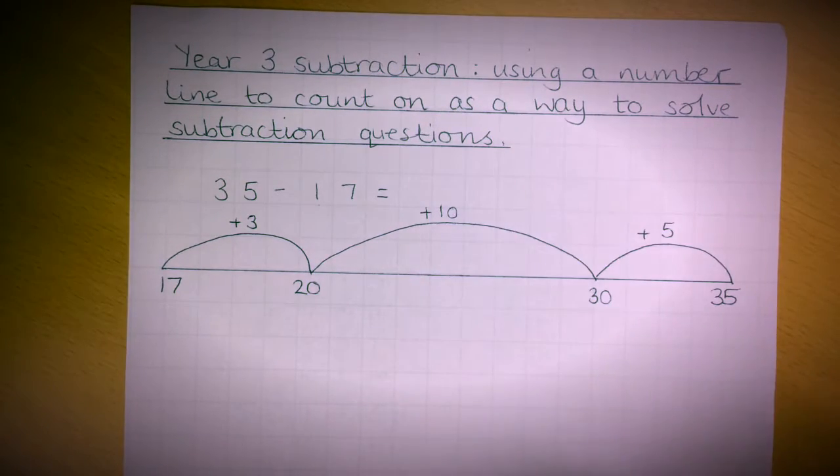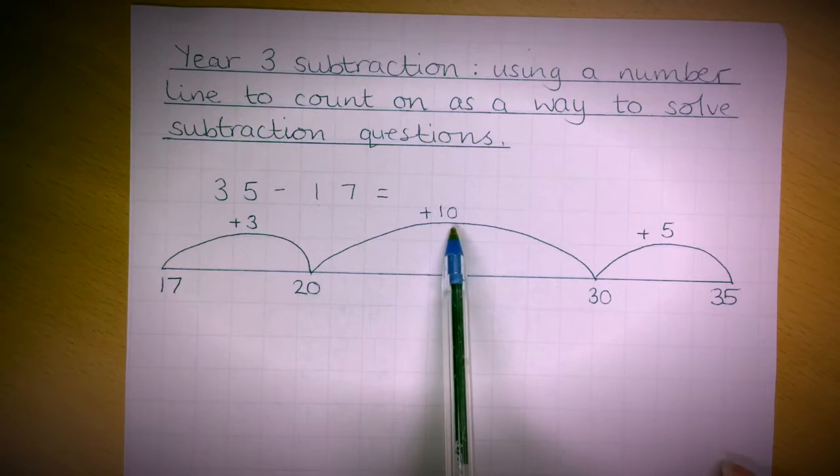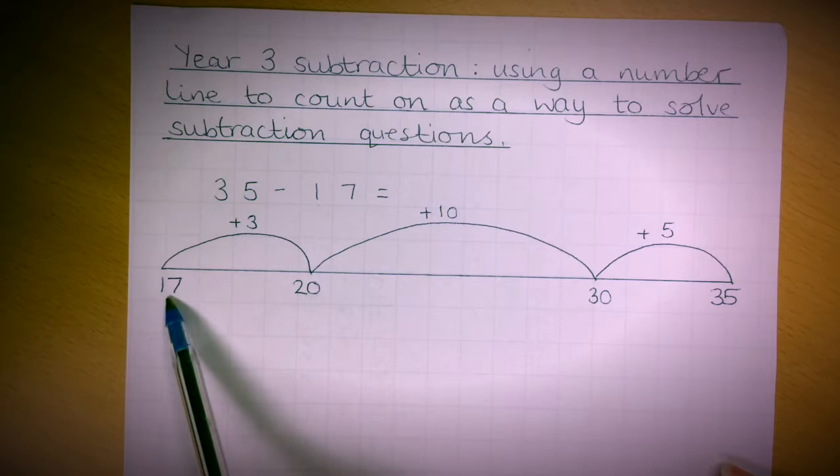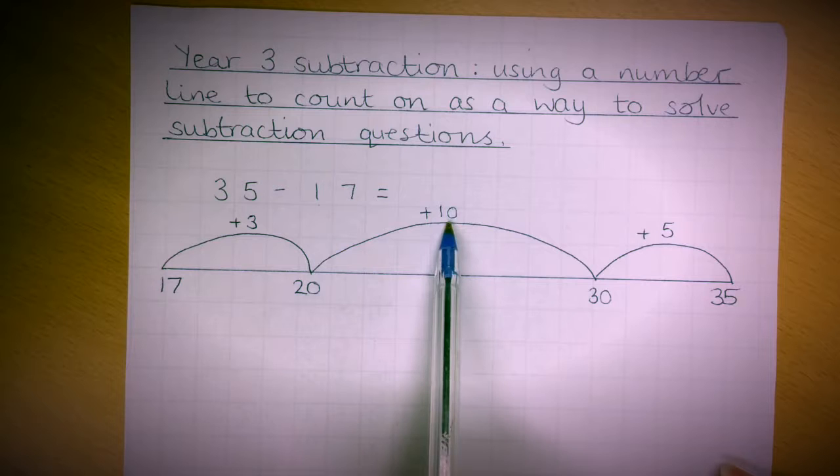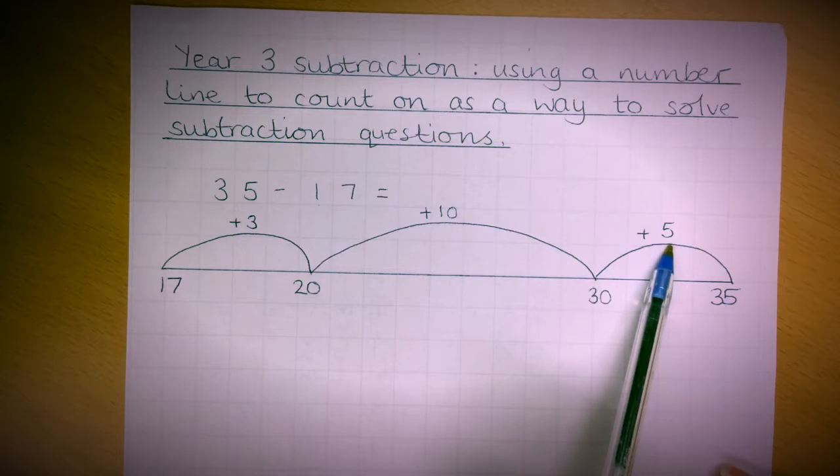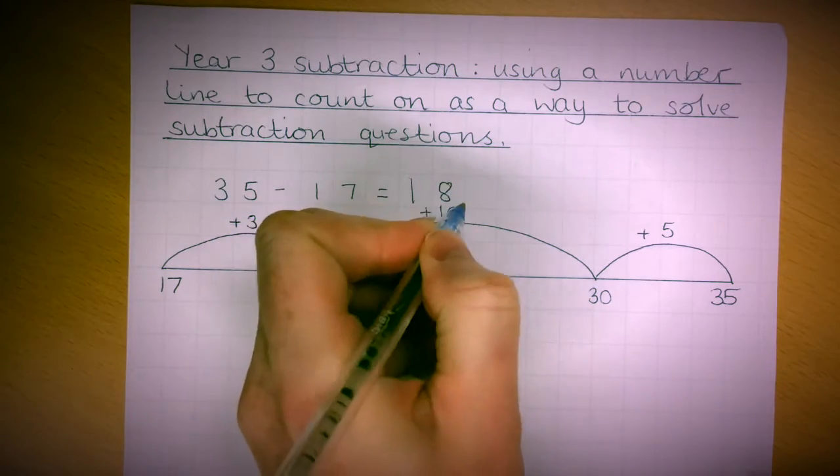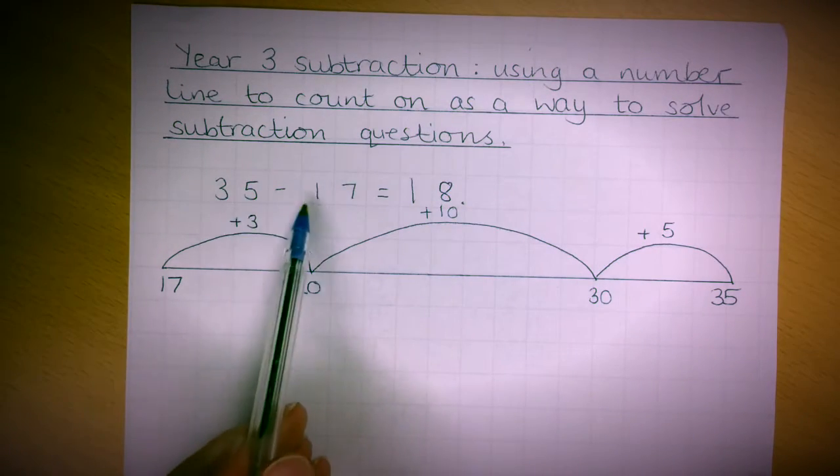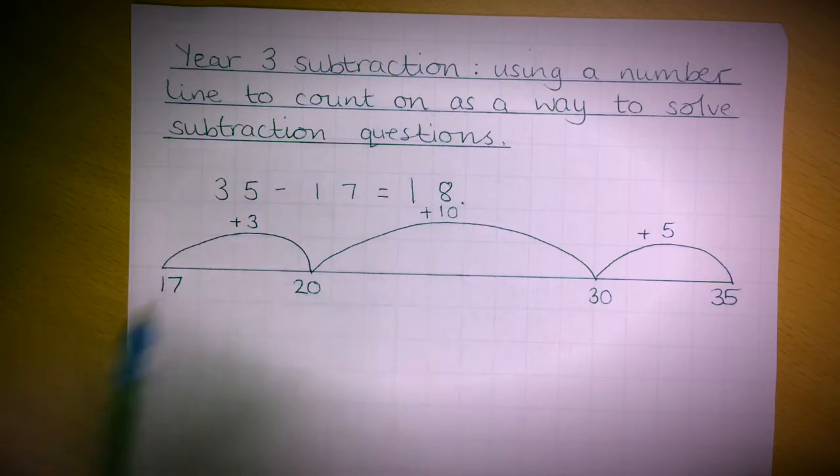Then I need to add up all the jumps together to find the total. We added 10 and 5, that's 15, add on a further 3 is 18. So the answer to 35 take away 17 is 18.